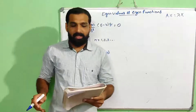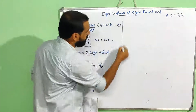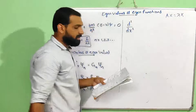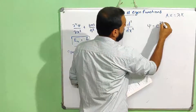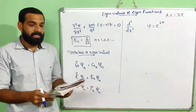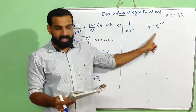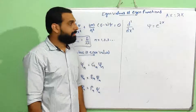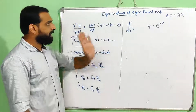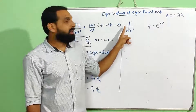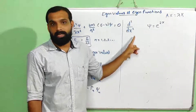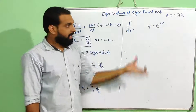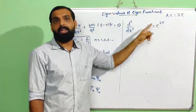Here is a problem. An eigenfunction of the operator d²/dx² is ψ = e^(2x). Find the corresponding eigenvalue. The operator d²/dx² is given, and the corresponding eigenfunction is ψ = e^(2x). That is why we can find the eigenvalue.